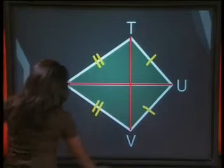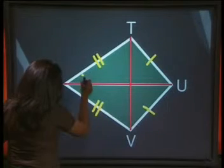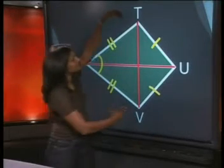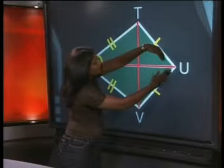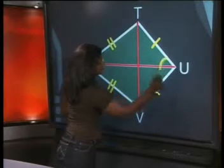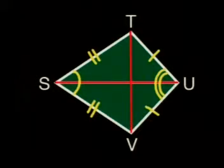The angle between equal sides TU and UV is the angle TUV. And this angle is also a vertex angle.